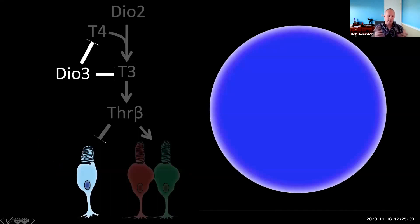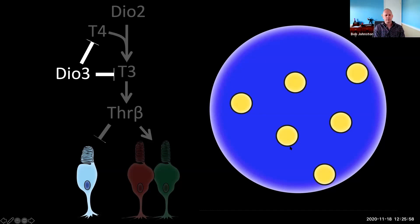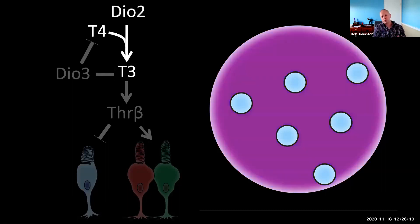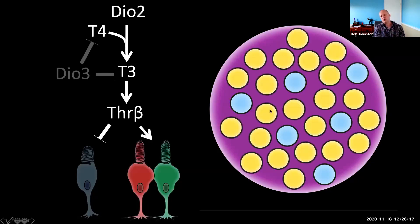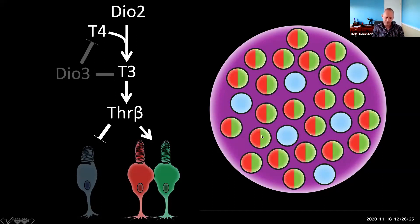We concluded this first story with the following model: early in development, we have expression of DIO-3, which degrades T4 and T3, providing a low thyroid hormone signaling environment and giving us blue cone fates. Over time, naive cones are born; because they have low thyroid hormone signaling, they take on the blue fate. As time goes on, DIO-3 decreases; DIO-2 is then turned on to convert T4 to T3, and when new naive cones are born, they see high T3 and take on the red-green fate. Currently, Christina McNerney in the lab is following up to figure out which cells express these enzymes and how they're temporally controlled.